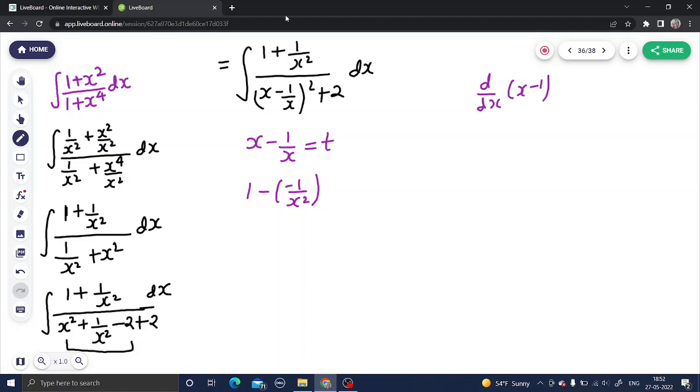I have to know that because d/dx of 1/x can be written as x power minus 1, and by the power rule minus 1 will come and power will decrease by 1, so this you will get as minus 1/x². And with this you will get dx equals to dt. Minus minus gives plus, so you will get 1 plus 1 upon x².